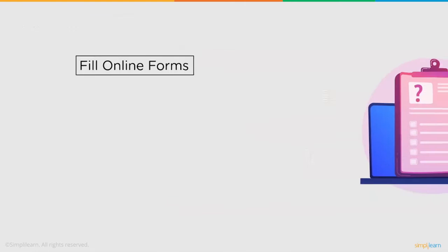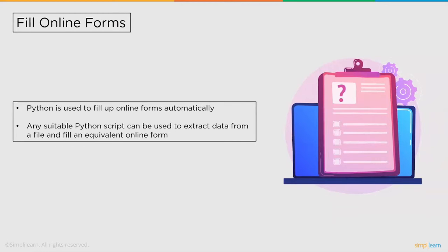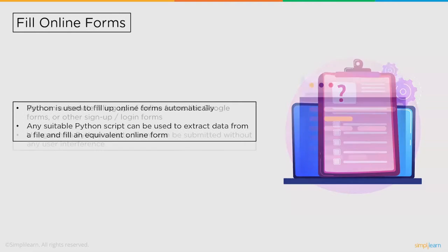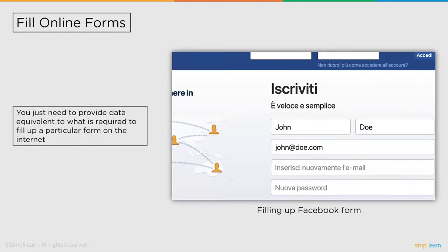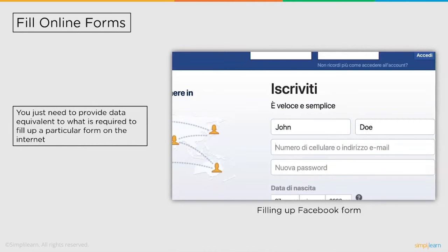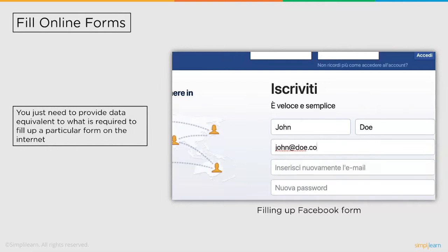Followed by Excel spreadsheets, we have fill online forms. Python also offers automated form fill features. Python is used to fill up online forms automatically. Any suitable Python script can be used to extract data from a file and fill in an equivalent online form. You can automate filling up of online forms like Google Forms or other sign-up and login forms. Using vanilla Python scripts, forms can be submitted without any user interface. You just need to provide data equivalent to what is required to fill up a particular form. For example, if a Google form has fields for name, age, and gender, the Python script should be written exactly in that order to fill up those fields.